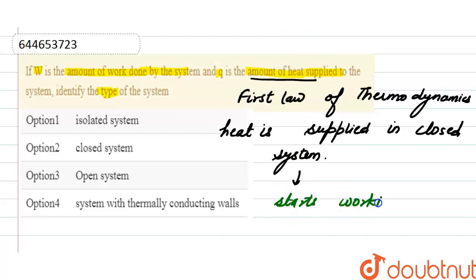The system starts working automatically, and here in the question it's given that work is done by the system. So the correct answer is option two: closed system is the type of system where W is the amount of work done by the system and Q is the amount of heat supplied to the system, according to the first law of thermodynamics.